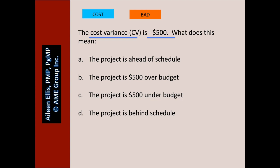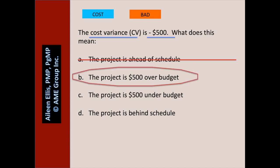Let's look at answer A: the project is ahead of schedule. Well, cost variance is about cost — we don't know about the schedule, so A is wrong. B: the project is $500 over budget. That's a bad thing from a cost standpoint — I think B is right. C: the project is $500 under budget — that's wrong. D: the project is behind schedule. We have no idea because we only know the cost variance and not the schedule variance.